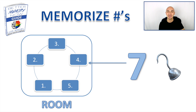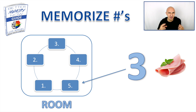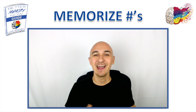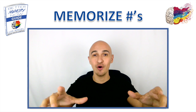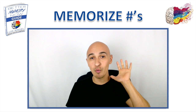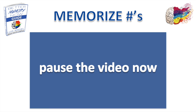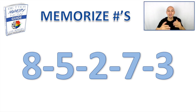Use your imagination to remember these numbers. On the fifth and last location, picture number three — ham — doing something on that location, maybe chopping up a piece of ham there. Now pause this video and say these numbers out loud or write them down. What were the five digits we just memorized? Here they are: eight, five, two, seven, and three.